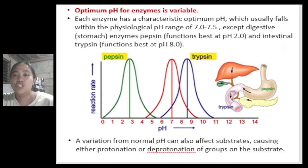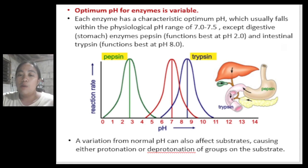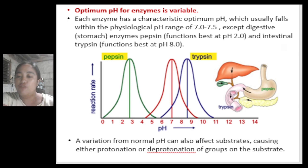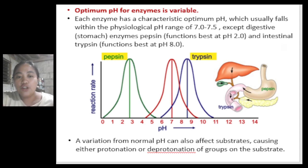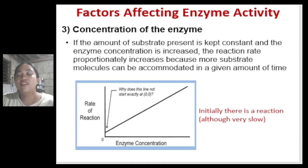Optimum pH for enzymes is variable. Each enzyme has a characteristic optimum pH, which usually falls within the physiological pH range of 7 to 7.5, except for digestive enzymes. For example, pepsin in our stomach functions best at pH 2, which is why the stomach is acidic. Trypsin in the intestines functions best at pH 8 or more basic. The acidic condition of pickled foods also significantly reduces the enzymatic activity of any microorganism present, preventing spoilage.